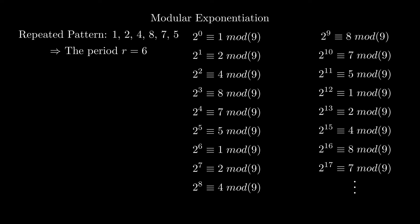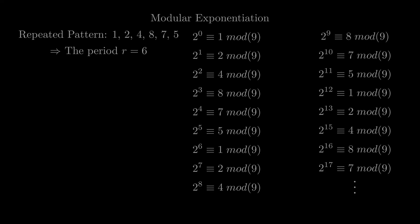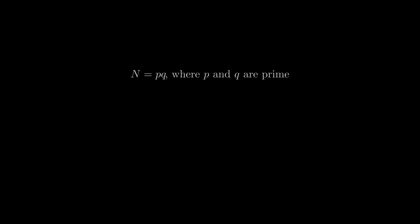If we are able to find the period, we can use some number theory to find the prime factors. If we have a number N, which is equal to the product of two prime numbers p and q, if we pick a number a where the gcd of a and N is equal to 1, so they share no common factors,